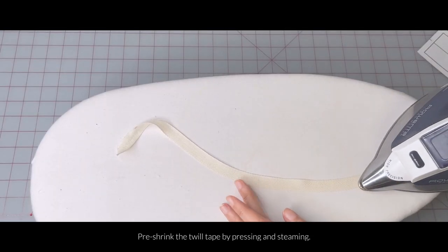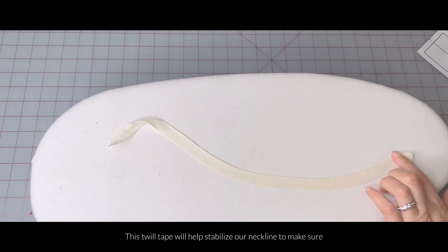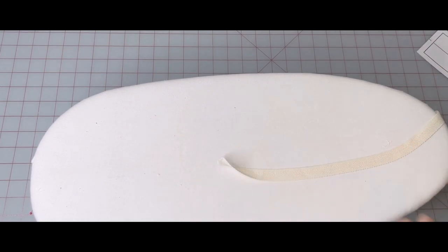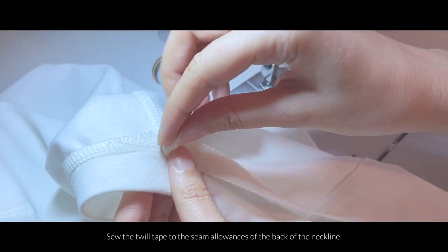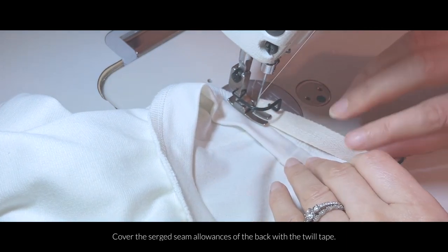Now pre-shrink your twill tape by pressing or steaming. This twill tape will help stabilize our neckline to make sure that it doesn't stretch out while we're wearing our t-shirt. Sew the twill tape to the seam allowances of the back of the neckline. Cover the serge seam allowances of the back with your twill tape.